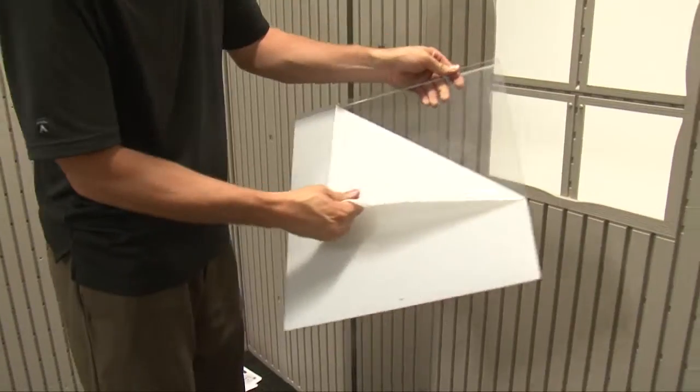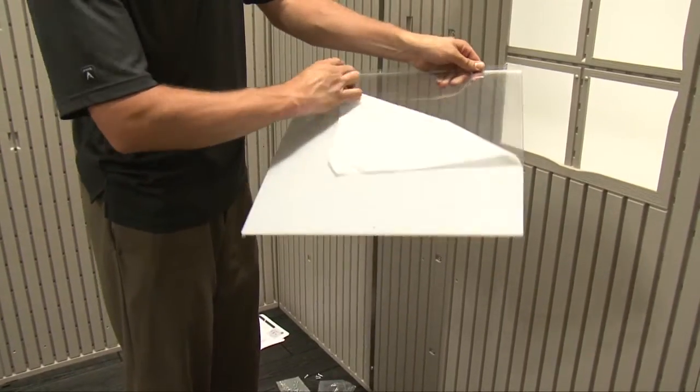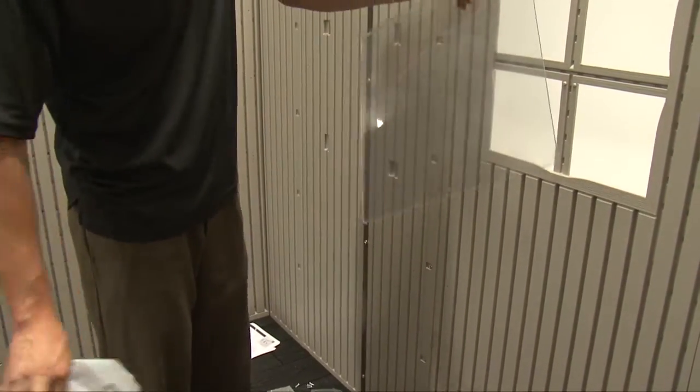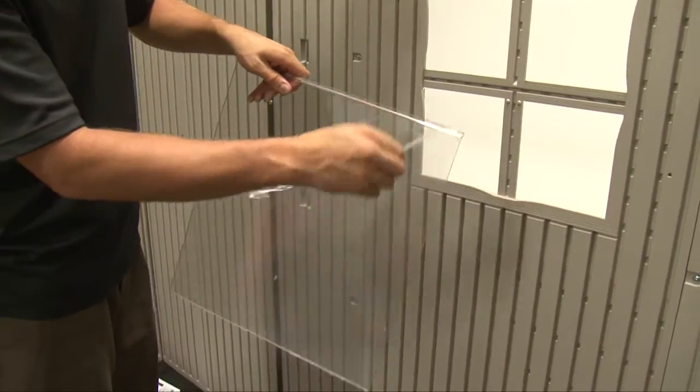In this instructional video, we'll install windows onto the window wall panels. Locate the bent window and remove the protective backing from both sides of it. Both sides have a backing.